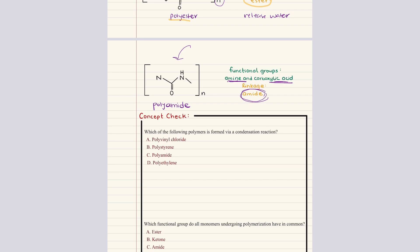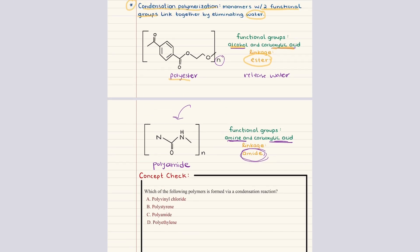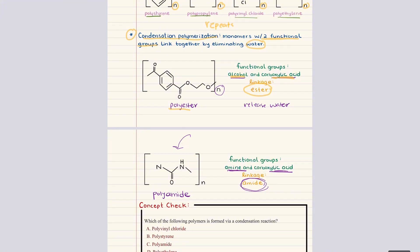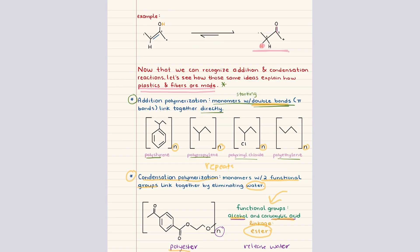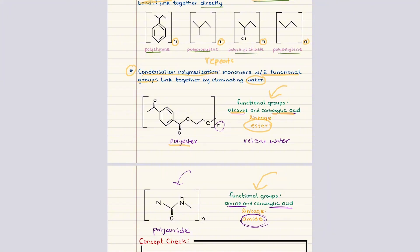At this point, the goal isn't to memorize these polymer structures, but to understand the logic behind how monomers join together. If the monomer contains double bonds, the chain forms through addition. And if the monomers contain two different reactive functional groups, the chain forms through condensation.